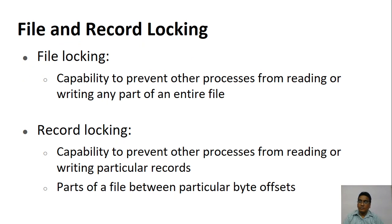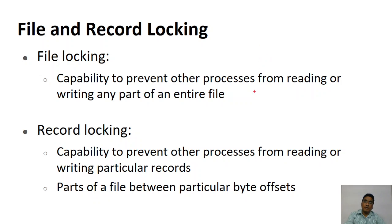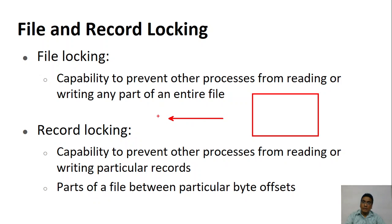Let's look at the difference between file locking and record locking. File locking means we don't allow others to use the file — that means the entire file is locked, so nobody can use the content within the file. File locking means nobody can read or write into the file.